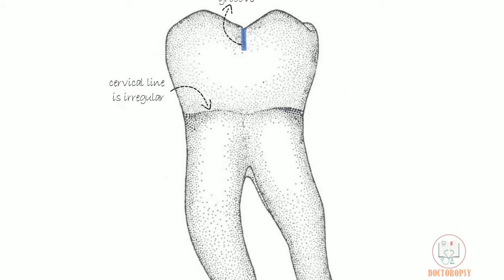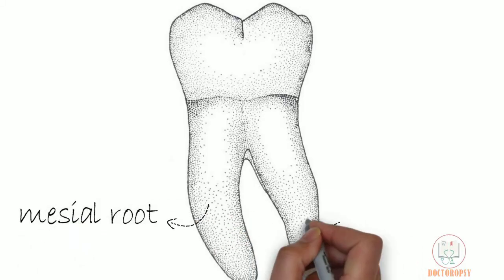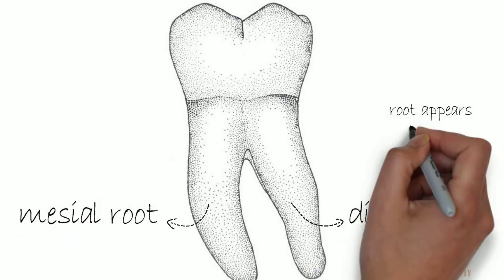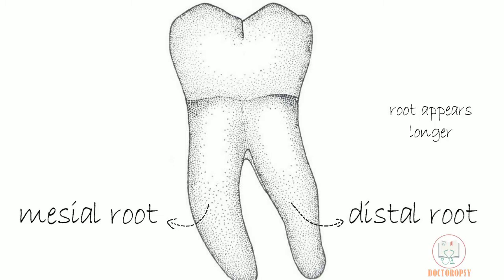From the lingual aspect, both roots are visible. Interestingly, the root appears longer from the lingual aspect than the buccal aspect. This is because the cuspal slopes and the cervical line are more occlusal than on the buccal side, making the root trunk 4 mm from this aspect.